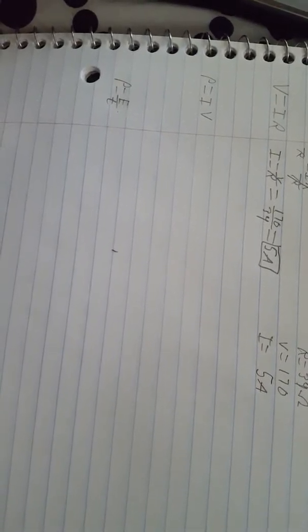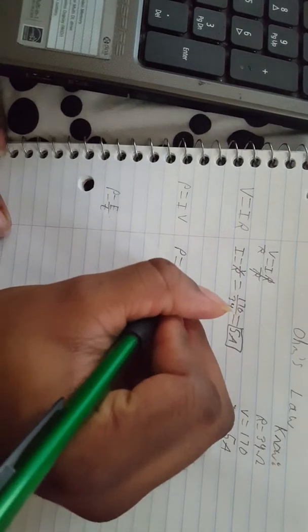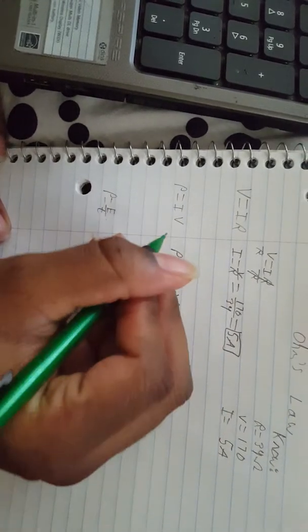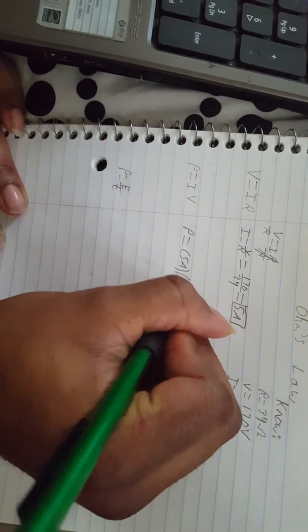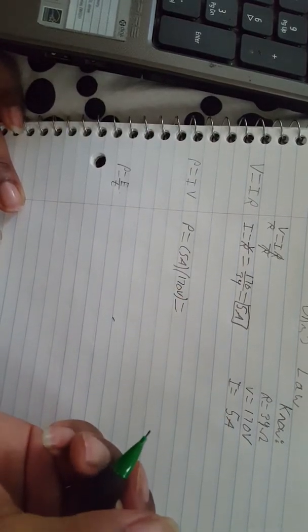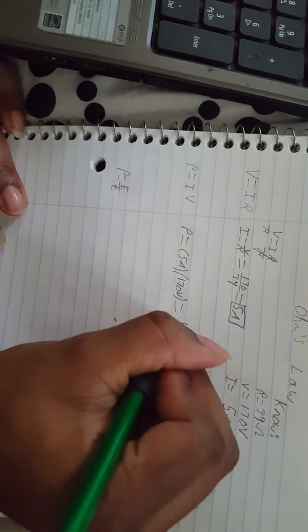How much power is being produced by the object? For part 2 we will use our second equation which is P equals IV. This one is simple because in our previous equation we just solved for I, so we plug in I which is 5 amperes and we have V which is 170 volts. You multiply that and you get 850.